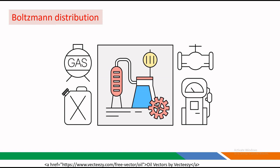Boltzmann distribution provides a statistical roadmap for understanding how energy is distributed among particles in a system. It is a crucial concept in physics, helping us make sense of the behavior of matter and energy at the microscopic level.